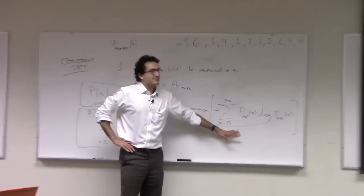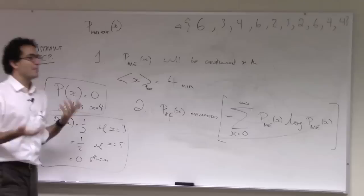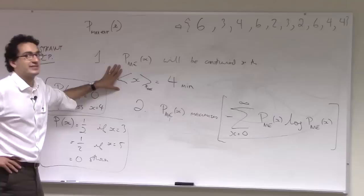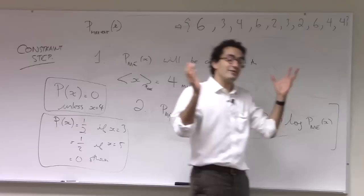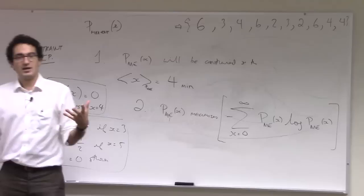But what we want is we want the distribution whose entropy is maximized. Otherwise, another way to say this is we want the distribution that leaves us maximally uncertain about how long the cab will take to arrive, except for the fact, of course, that one thing is constrained. The one thing that we've constrained is that the cab takes 4 minutes on average. But otherwise, I want to be maximally uncertain. I don't want to have the way we would say this sort of philosophically, I don't want to have any prejudices about what New York City cabs do. I want to be maximally uncertain about their behavior subject to this one constraint.